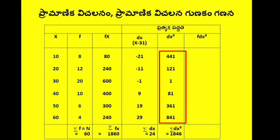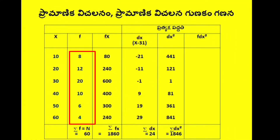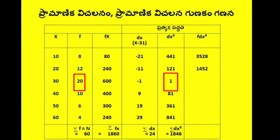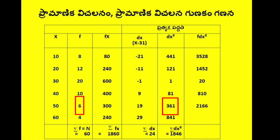Now for fdx squared, the dx squared values are 441, 121, 1. The f values are 8, 12, 20, 10, 6, 4. So fdx squared gives: 8 times 441, 12 times 121 equals 1452, 20 times 1 equals 20, 10 times 81 equals 810, 6 times 361 equals 2166, 4 times 841 equals 3364.